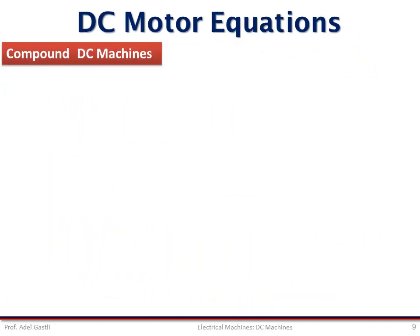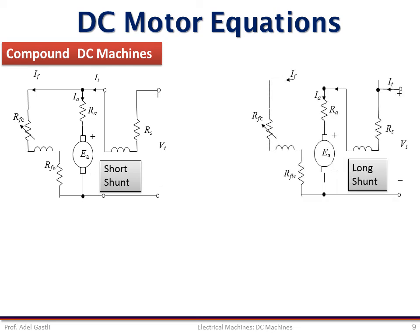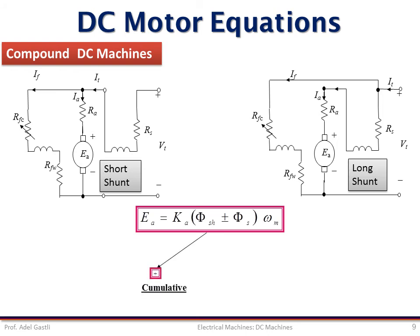For the compound DC machines, we can proceed in a very similar way. This is the equivalent circuit of the compound short shunt type DC machine, and this is the equivalent circuit of the compound long shunt type DC machine. Notice that both have the same EMF expression, except that the shunt and series fluxes add to each other when the series and shunt windings are connected in cumulative mode, and they subtract when their windings are connected in a differential mode.